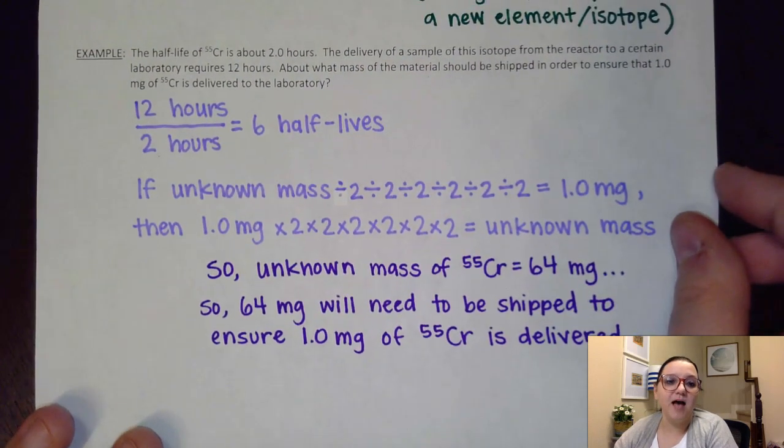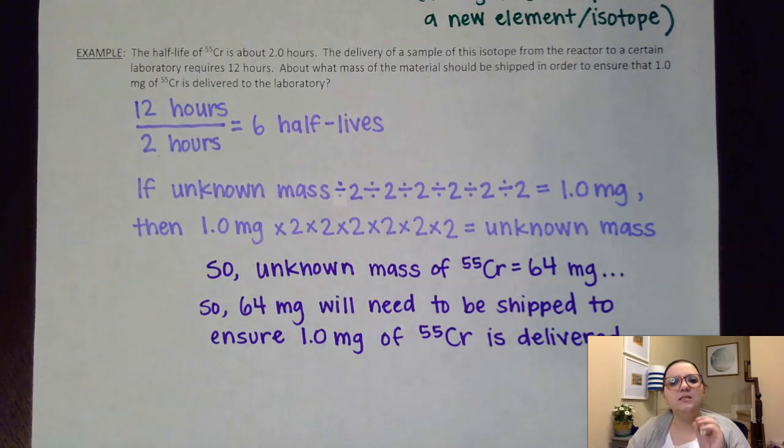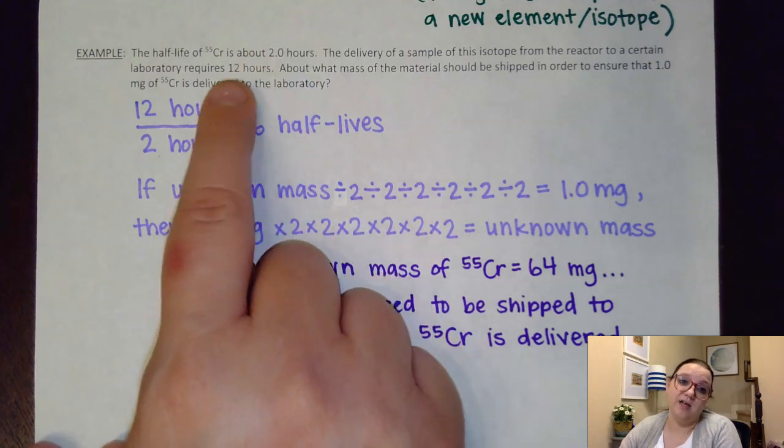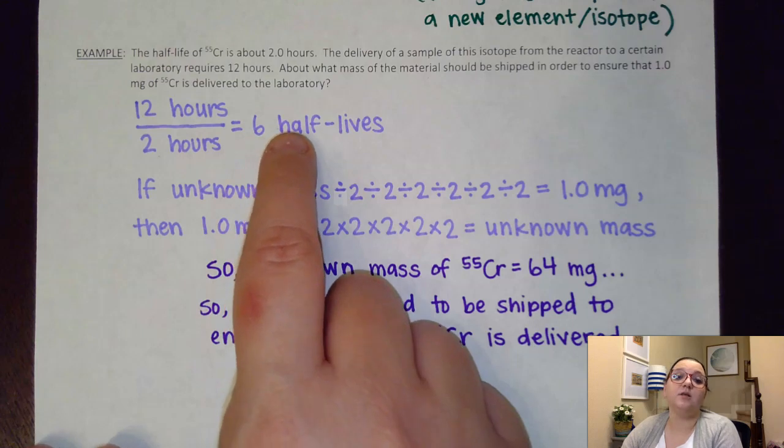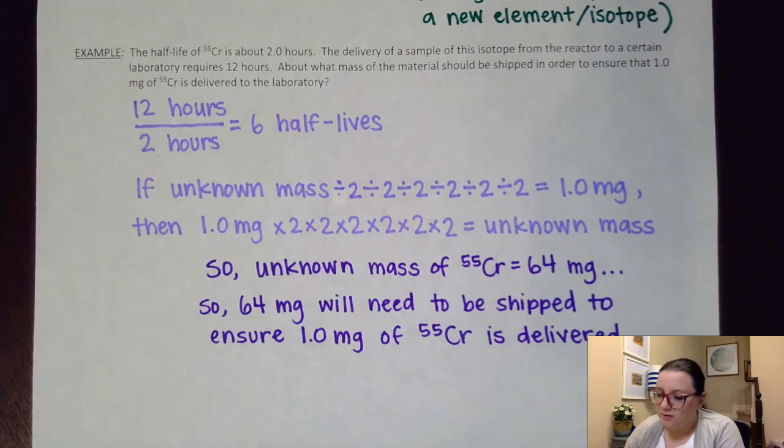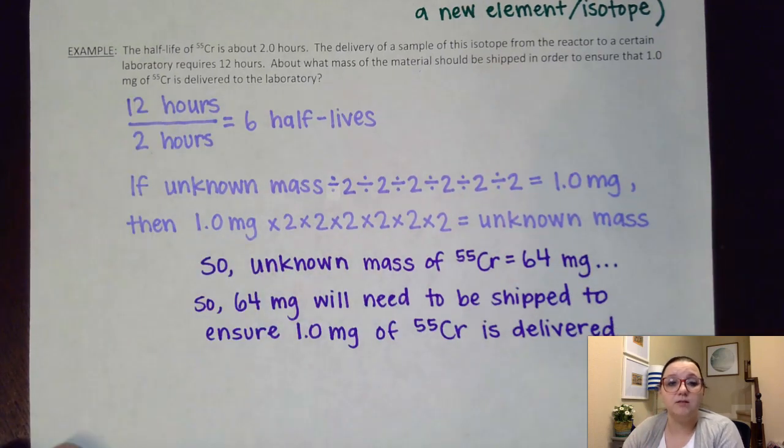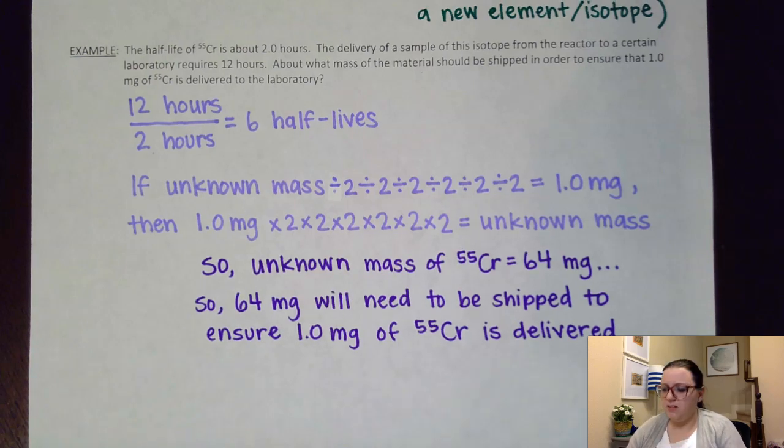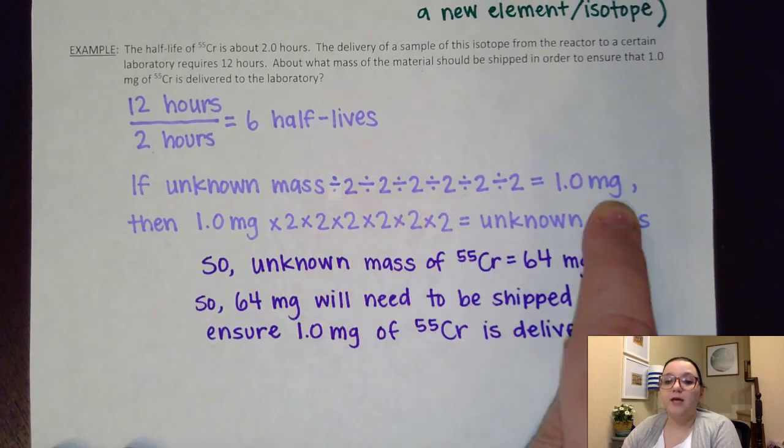Last but not least. This one says the half-life of ⁵⁵Cr is about two hours. The delivery of a sample of this isotope requires 12 hours. So 12 hours of time is going to pass. It asks about what mass of the material should be shipped in order to ensure that one milligram of that ⁵⁵Cr is delivered to the lab. So they're asking me here to solve a mass, which means I need to use the times to figure out my half-lives. Each half-life is two hours, but I'm going to have 12 hours that's going to have passed. And so that would get me six half-lives that are going to take place in that time frame. The mass is kind of interesting because they're giving me how much I want to remain at the end. I want one milligram to remain at the end of this. So I need to go back and figure out, how much would that have mean that I would started with and halved six times in order to get to one milligram?